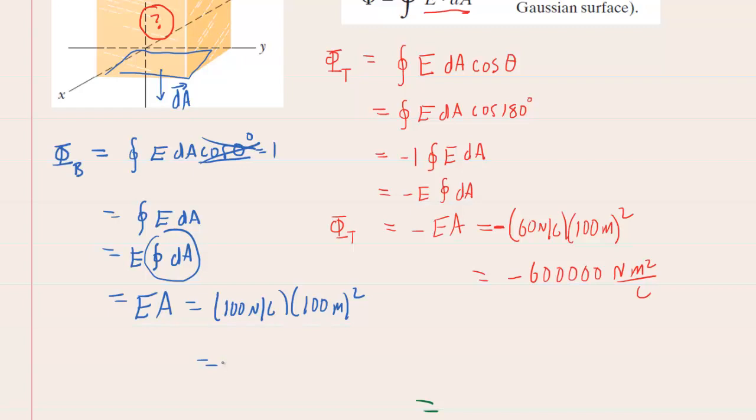So we'll pick up our calculator and we're going to get 1000000 newton meters squared per coulomb. So we've got the top and the bottom electric fluxes. We haven't gotten the sides yet.